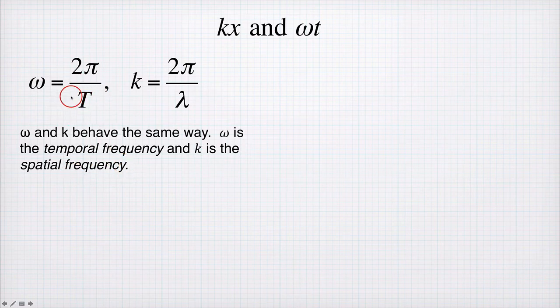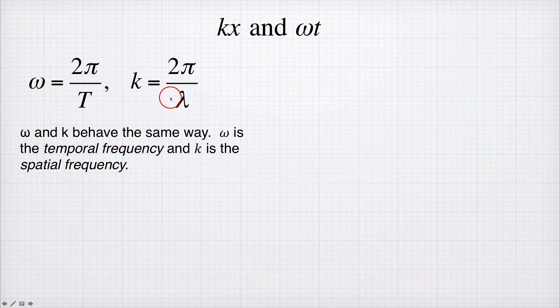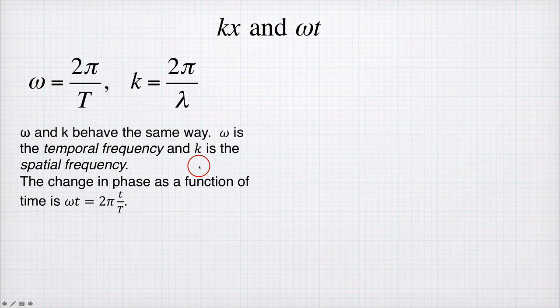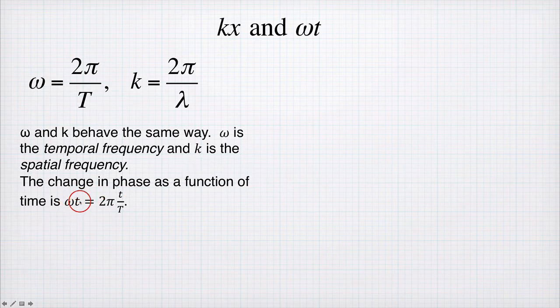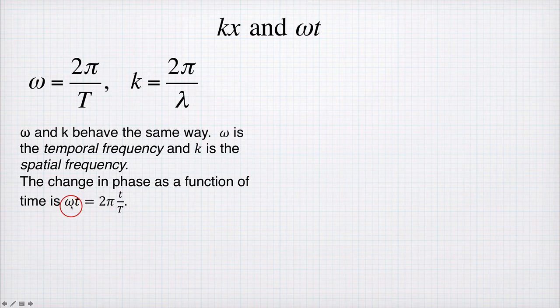In this case radians per second, in this case radians per meter. Now the change in phase as a function of time is the angular frequency in time multiplied by the time period that you're interested in. So the temporal angular frequency multiplied by the time is 2π times t divided by the period.